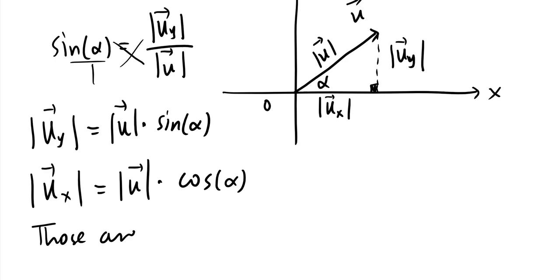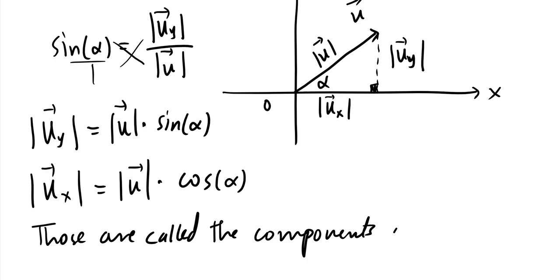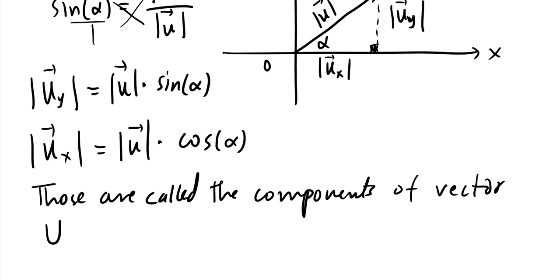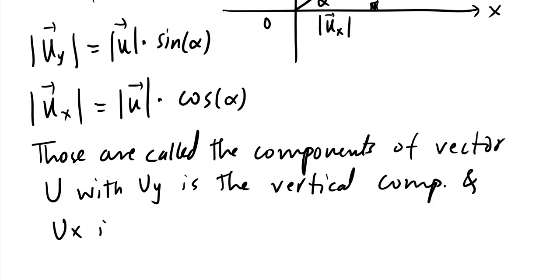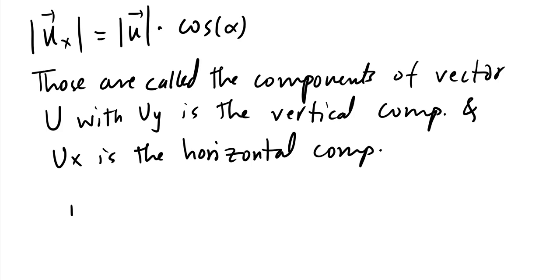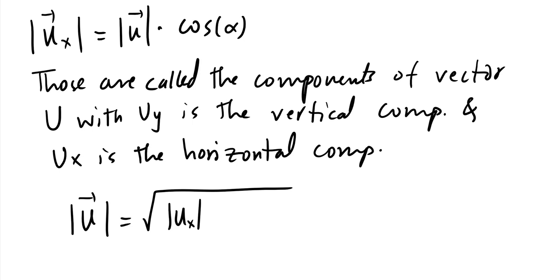These two quantities are called the components of vector u. The y-component, u_y, is the vertical component, and u_x is the horizontal component. In general, the magnitude of u equals the square root of u_x squared plus u_y squared — which we already applied in the previous example.